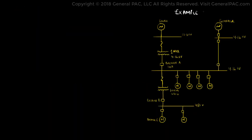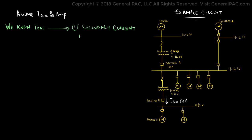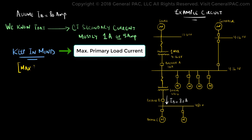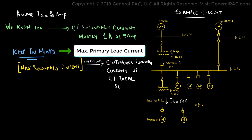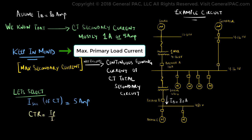Let us now consider an example circuit where we have a current transformer connected to breaker B. Let's assume that the current flowing through breaker B is 80A. We already know that most CTs have a secondary current rating of either 1A or 5A. Keep in mind that for maximum primary load current, the secondary current produced does not exceed the continuous thermal current rating of any part of the CT total secondary circuit. For this case, let's select a rating of 5A. If we plug in the 80A value in the ratio formula, then the resulting ratio is 16, which is 80 full load amps divided by 5A rated current on the secondary CT circuit.